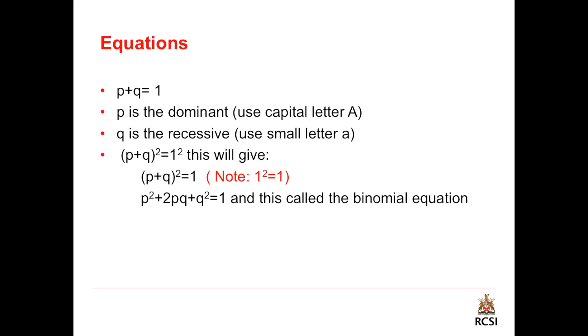And this is called the binomial equation. p squared equals homozygous dominant and we refer to it by double capital letters, for example double capital A. q squared is the homozygous recessive, referred to by double small letters like double small a. 2pq is the heterozygous, one capital letter and one small letter, for example capital A small a.